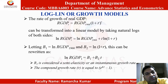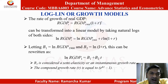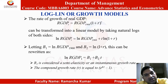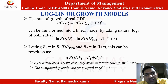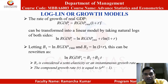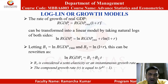Log linear or growth models: the rate of growth of real GDP. RGDP at time T is written as the initial value for 1960, RGDP times (1 + R) raised to the power T. This can be transformed into a linear model by taking the natural logs of both sides. So, ln(RGDP_T) = ln(RGDP_1960) + T times ln(1 + R), where R is the growth rate of GDP.